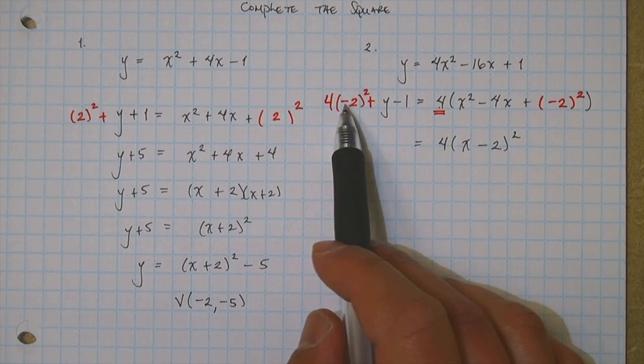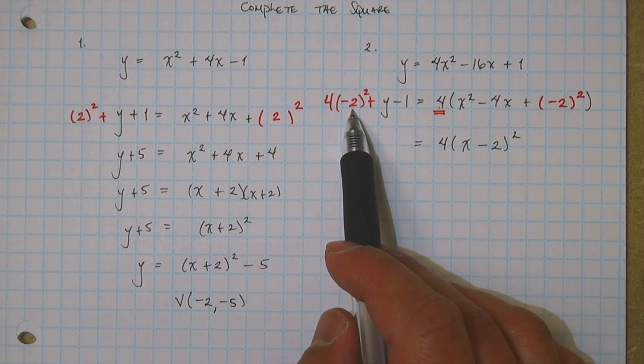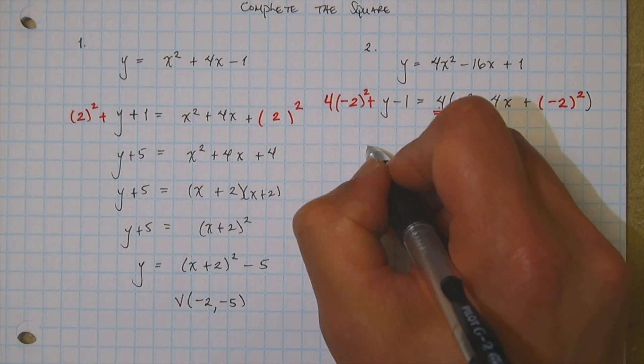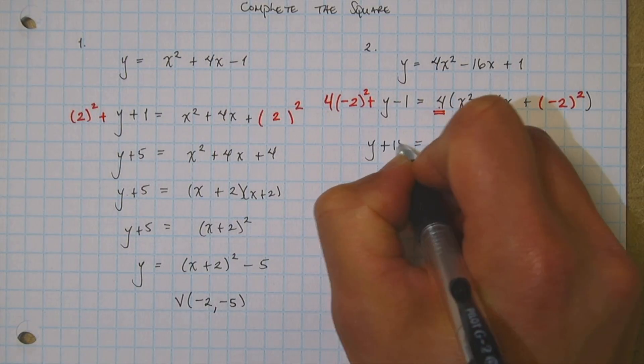Over here, what happens? Well, negative 2 squared, that's positive 4. 4 times 4 is 16. 16 minus 1 is 15. There it is.